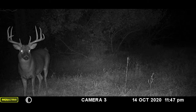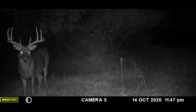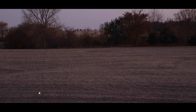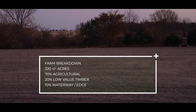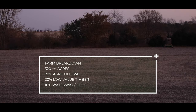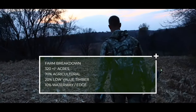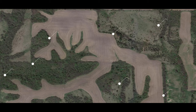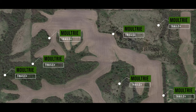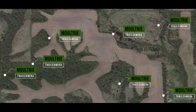Similarly to Episode 1, this is the same farm where we were able to harvest Crunch. The farm is 320 acres, comprising 70% agricultural land, 20% timber, and 10% ditches and waterways. We used probably 8 to 10 cameras throughout the season to cover our needs on this farm.